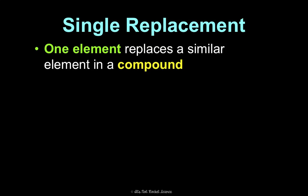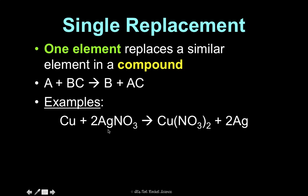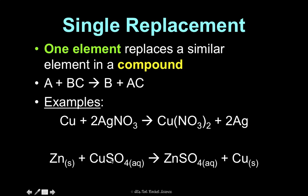Single replacement — these two I think are the hardest to identify. We're looking for one element replacing a similar element in one compound. In the generic equation A plus BC, the A and the B switch, so now you have the B element by itself and a new compound. For example, copper and silver nitrate make copper nitrate and silver — the copper and silver just trade places. You're looking for one element and one compound. Similarly, zinc and copper sulfate make zinc sulfate and copper. That's single replacement.